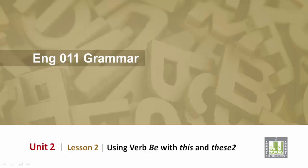English 011 Grammar, Unit 2, Lesson 2: Using the verb be with 'this' and 'these', where 'these' can mean more than one — two or more.